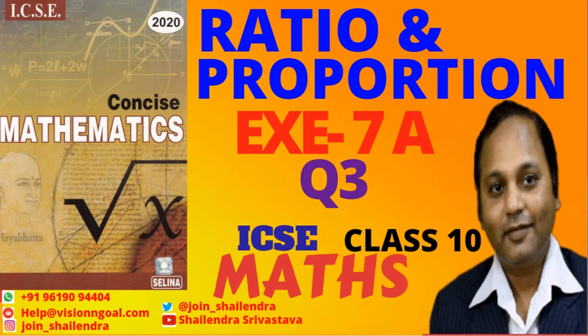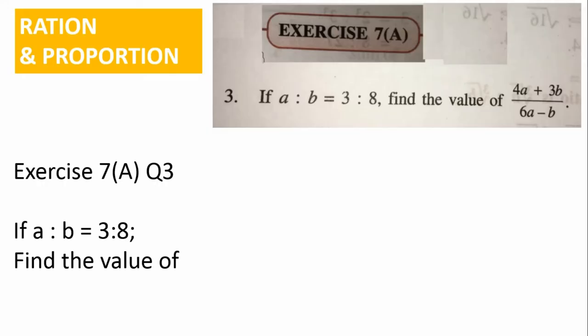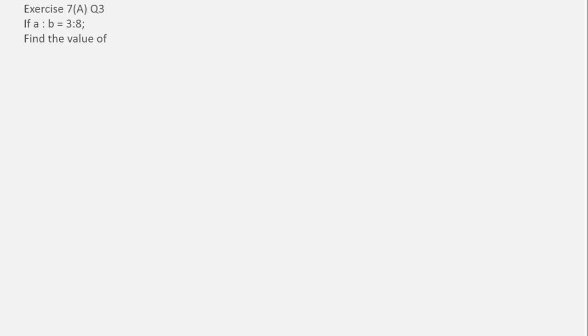So friends, in today's video, we are going to cover the third question of ratio and proportion chapter exercise 7a. This is the question: if a is to b is equal to 3 is to 8, then find the value of 4a plus 3b oblique 6a minus b.